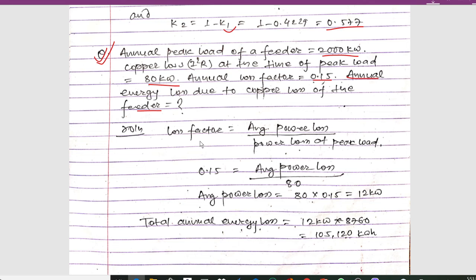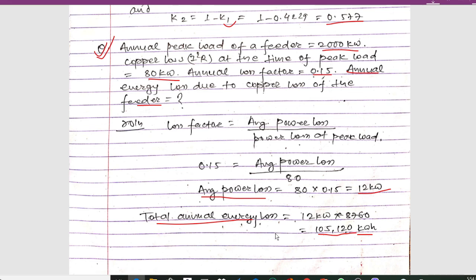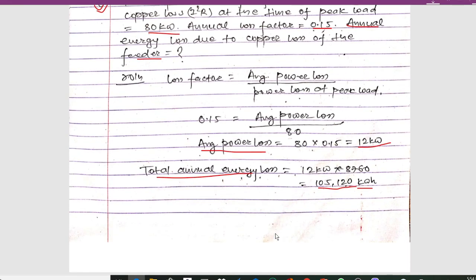The loss factor is 0.15, and the power loss at peak load is 80 kilowatt. From this relation, we can obtain the average power loss as 12 kilowatt. To calculate total energy loss, we multiply the average power loss by 8760 hours, giving us 105,120 kilowatt-hour. This is our final answer.